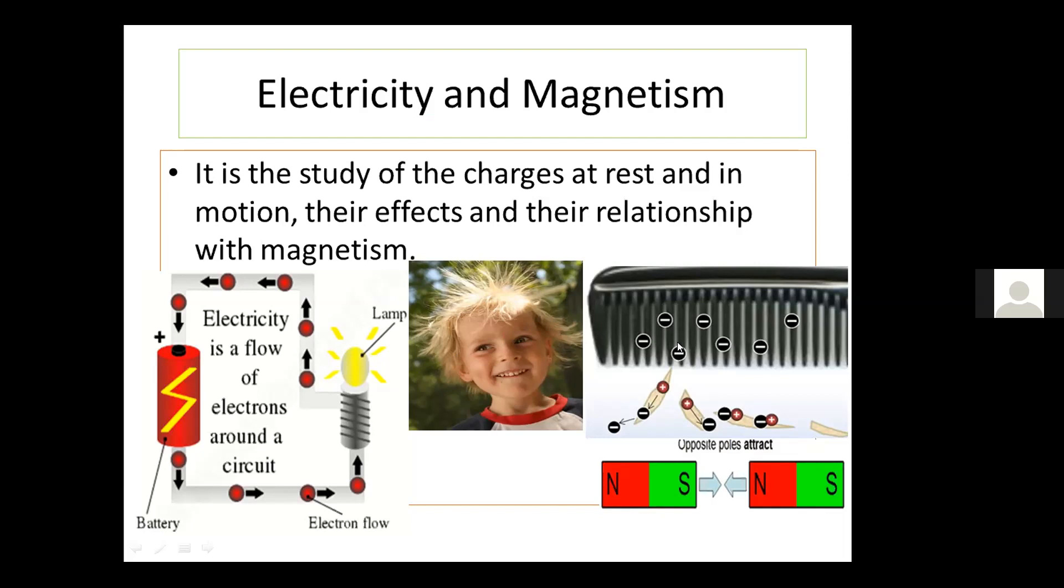In the third picture, when we run a comb through our hair and bring it to small pieces of paper, the comb attracts them like two opposite poles of a magnet would do. This property of attraction or repulsion is magnetism. We will be discussing electricity and magnetism in detail in class 10.